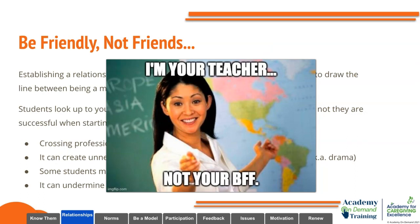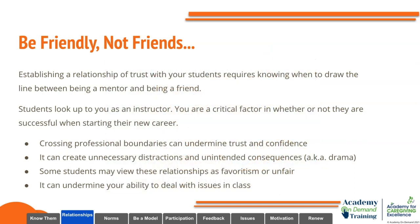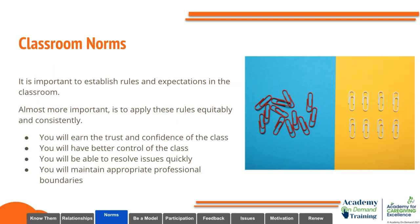As instructors, you should be friendly, but not friends. Establishing a relationship of trust requires knowing when to draw the line between being a mentor and being a friend. Crossing professional boundaries can undermine the trust and confidence you've built, create unnecessary distractions and drama in the class, and may be viewed as favoritism by other students. To maintain these boundaries, establish rules and expectations and apply them equitably and consistently for all. If you do this, you will earn trust, maintain control, resolve issues quickly, and maintain appropriate professional boundaries.